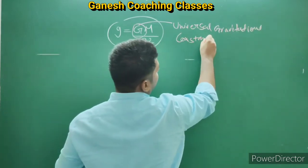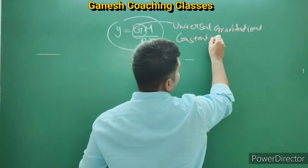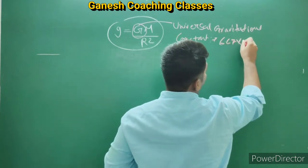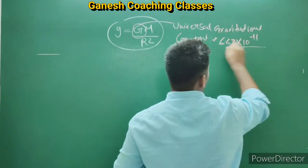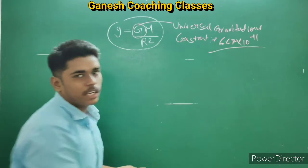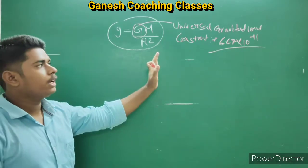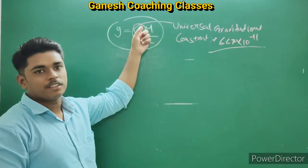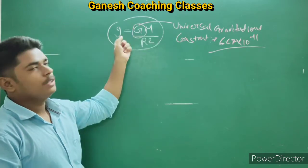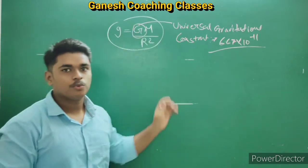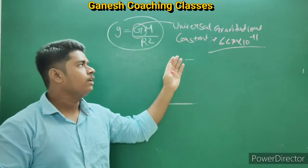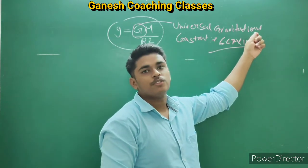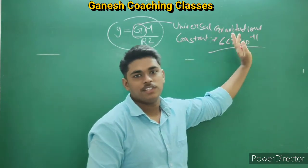We saw that the value of G is 6.67 × 10⁻¹¹. Its unit — if we don't remember the unit, we can calculate it from the formula. The unit is Newton meter squared per kilogram squared (N·m²/kg²).